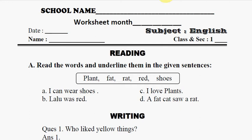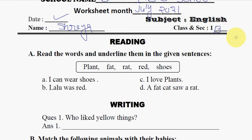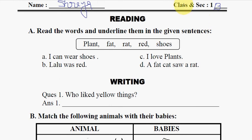In our worksheet, the first thing I have included is the school name — the student can write their school name here. Second is the worksheet month. This worksheet belongs to Class 1 students. Here you can write any month, or whenever you are going to use this worksheet. A date column is there for the student to write the date. We can also write the name of the student, their section, and if you have more than one section, the student will write it here.